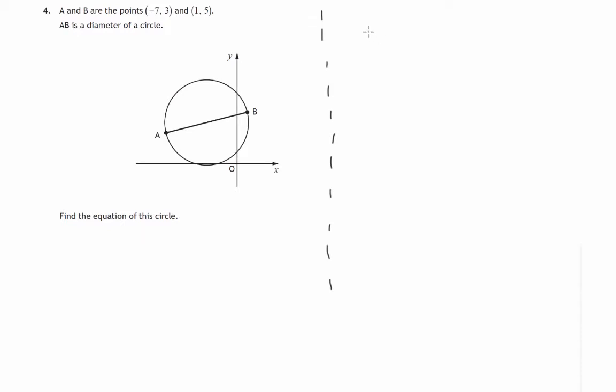If we know the center of a circle is (a,b) and we know the radius is r, then the equation of that circle will be given by (x-a)² + (y-b)² = r². So to find the equation of a circle we need to know the center and we need to know the radius.